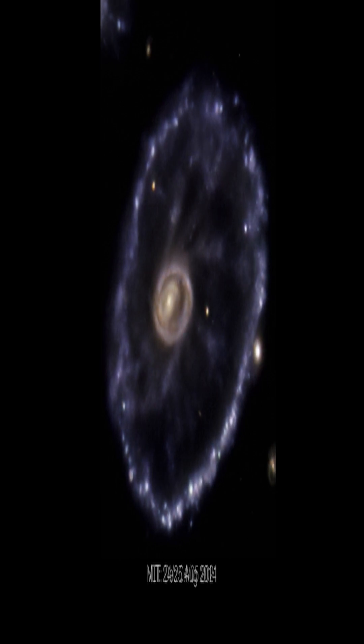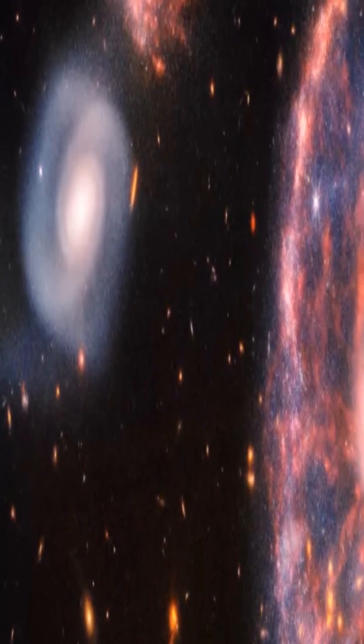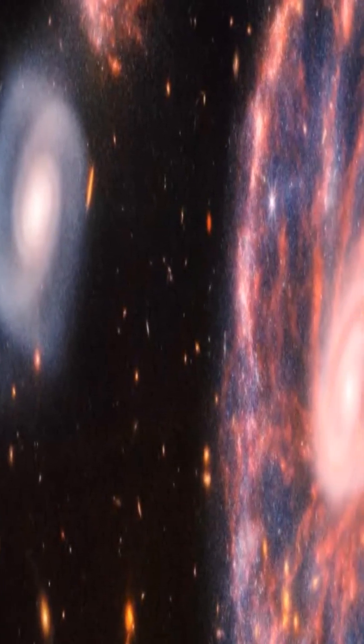The cartwheel is a very uncommon type of galaxy known as a ring galaxy. It is situated around 500 million light-years from Earth in the constellation Sculptor in the southern sky.